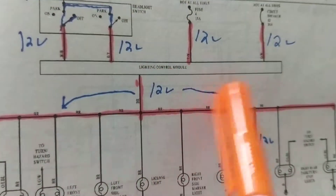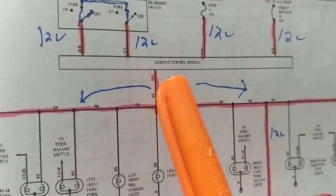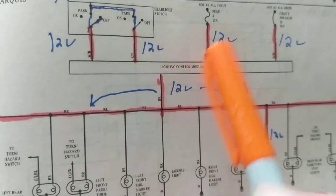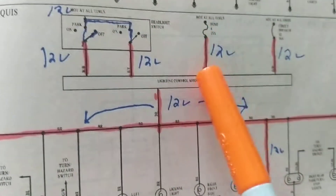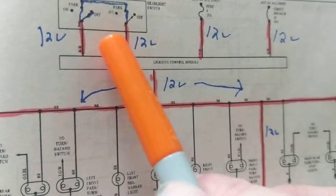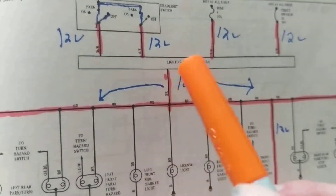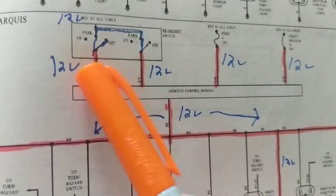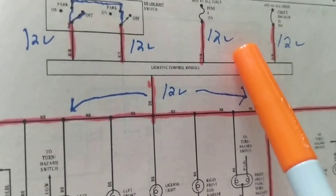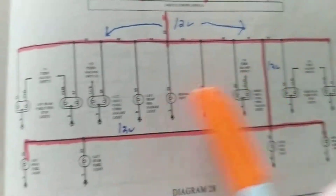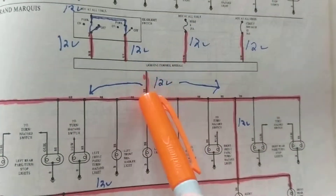What do we know about what's inside the module? We don't know much. All we know is that somehow 12 volts goes in. These are the inputs, and this is the output. The input over here is 12 volts — this feeds the loads. So something that feeds the loads would be the output.